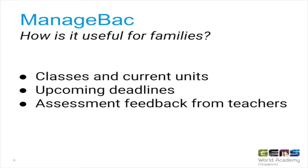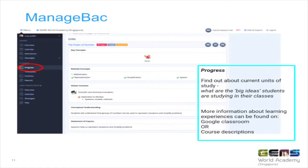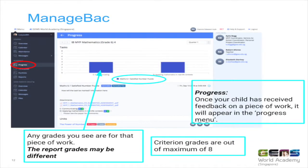ManageBac is a great tool for you as families. You will be able to see your child's classes, the units they're studying, assessment information, and deadlines. If you click on the calendar tab on the left-hand side, you'll be able to see deadline information for each of your child's classes, and by clicking on one of those coloured icons you'll have more information about the tasks. If you click on the progress tab, you can select the class you're interested in and learn more about the unit of study. From there, you can click on a specific task and find out about the grades and any feedback your child received.